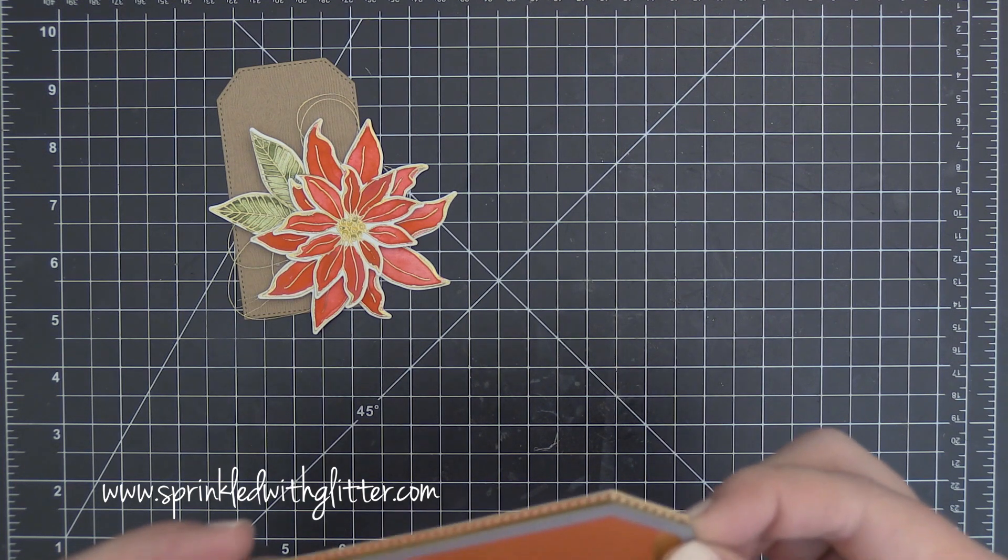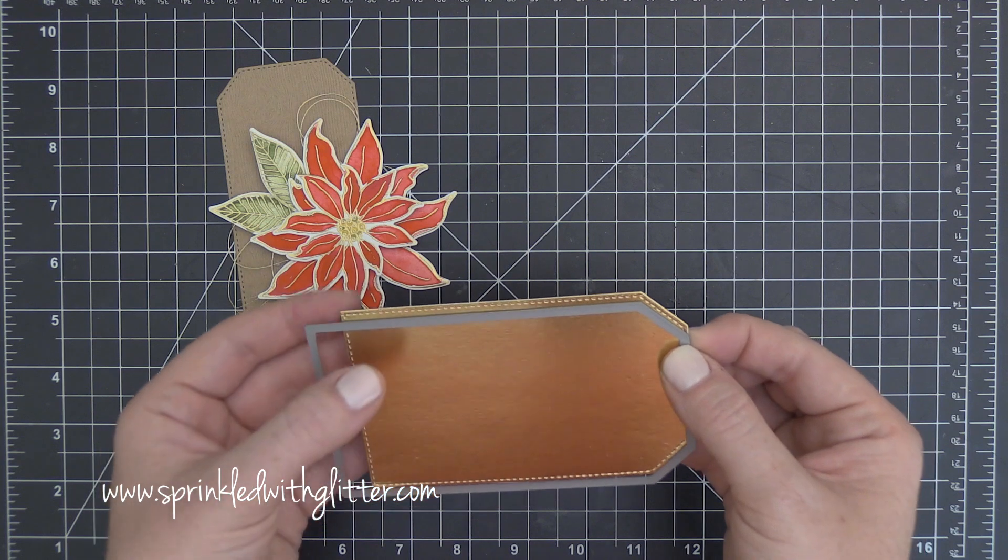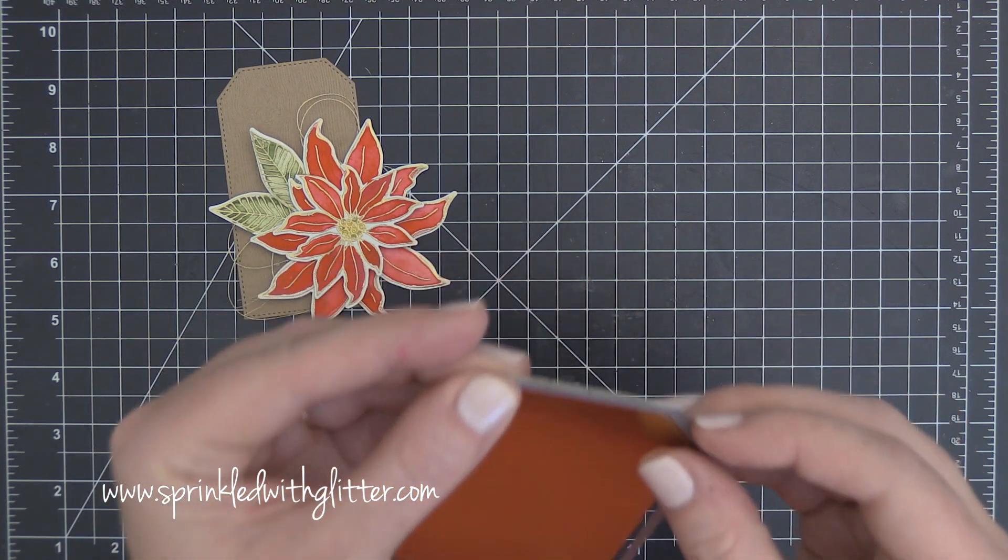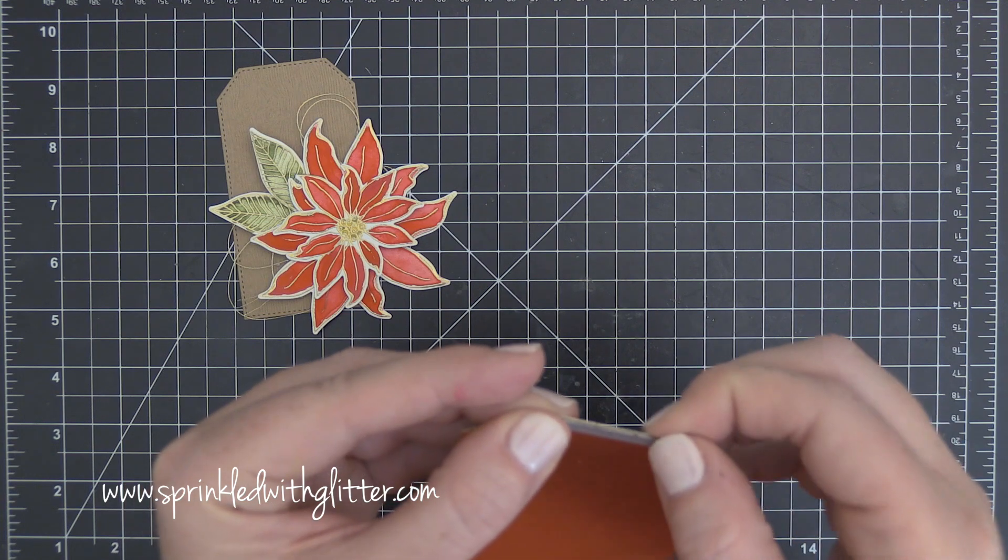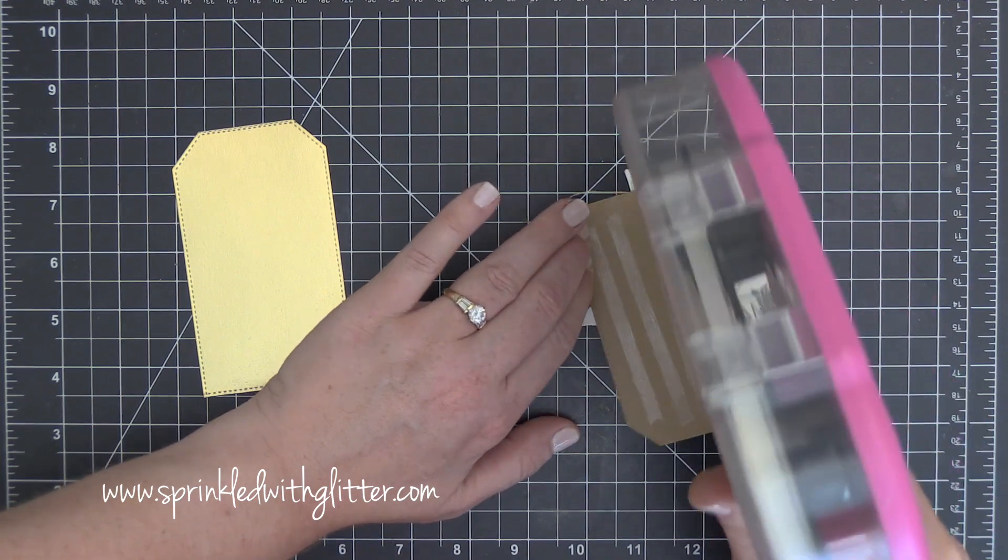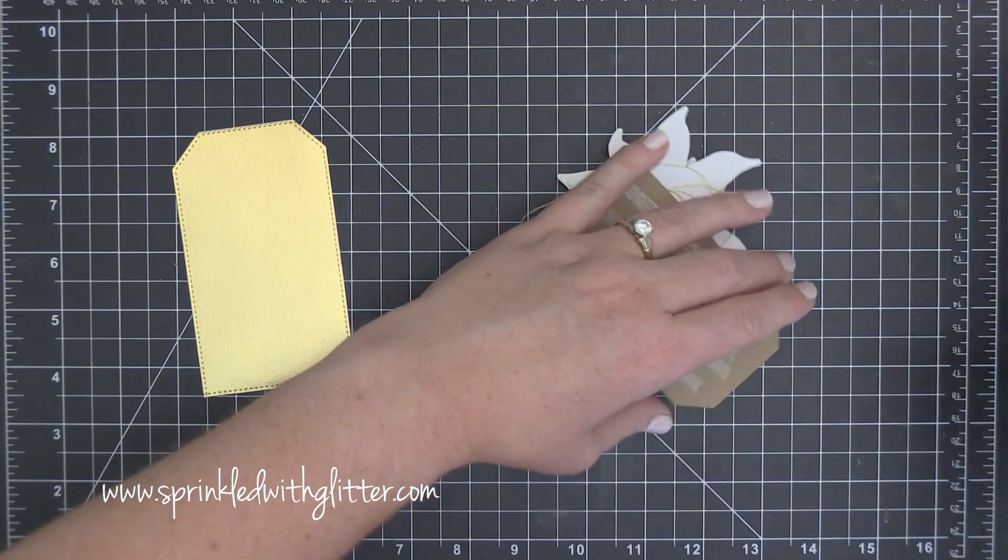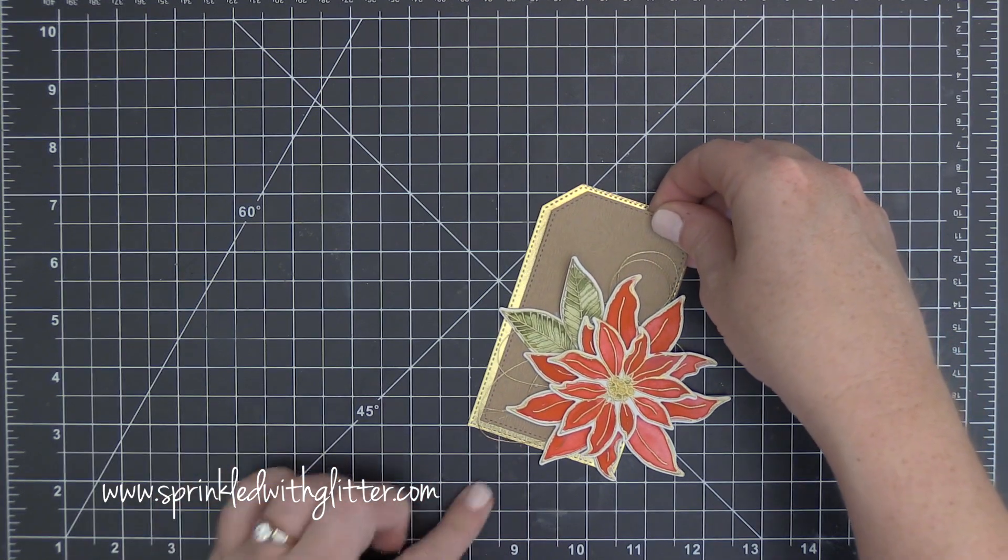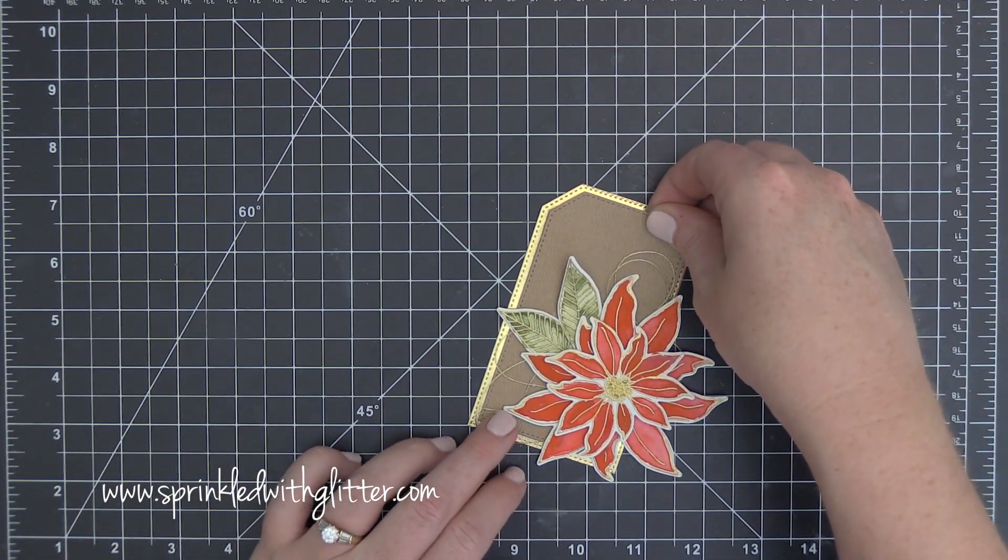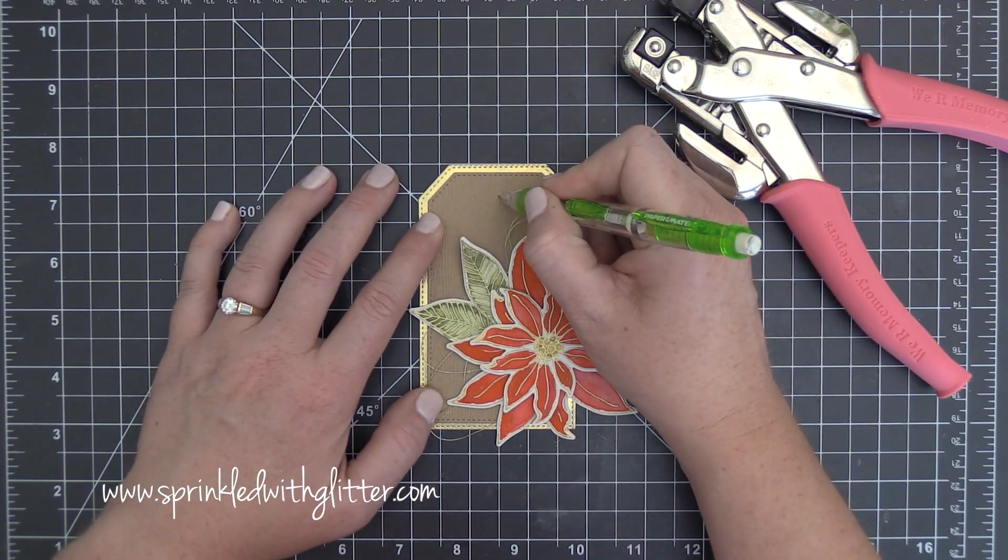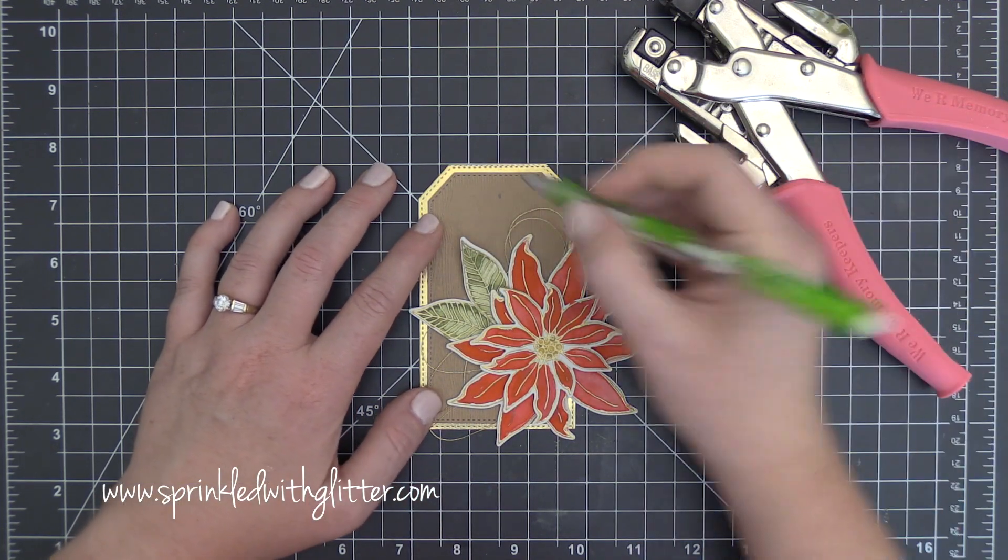Now once again when I was holding this up I wasn't feeling like the proportions were quite right so I've gone ahead and lined up the stitching again along the top part of that tag but I've shifted this tag die over just a little bit and cut that again. That made the tag a little bit narrower and it made the dimensions more pleasing to me. When I got that all cut I went ahead and added some tape runner adhesive to the back of that woodgrain craft piece there and added it on top of the gold piece.